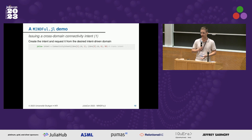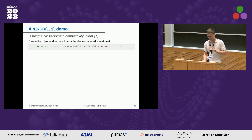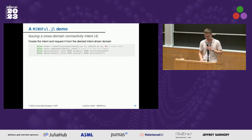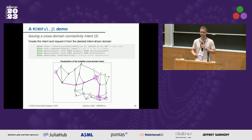Now we can create the cross-domain connectivity intent. We first create the connectivity intent between the source node and the target node, with a certain bandwidth of, for example, 50 gigabytes per second. Then we issue it to a specific IBN — here to the first one. Then we compile the intent, and lastly we install it. Further, we can visualize it to see how exactly the realization of the intent looks.